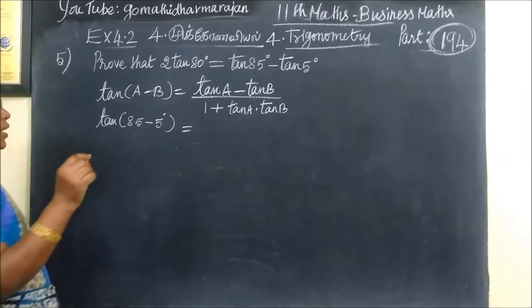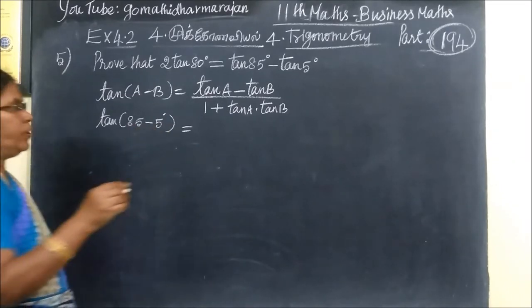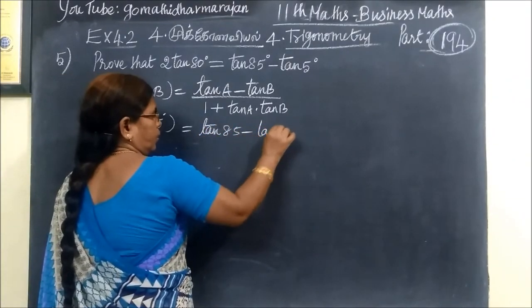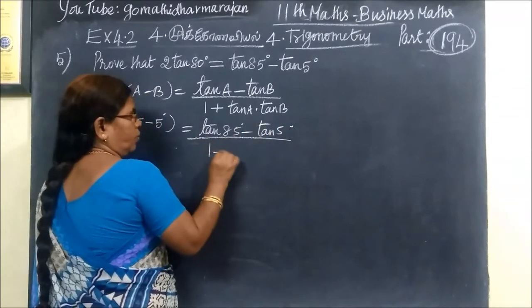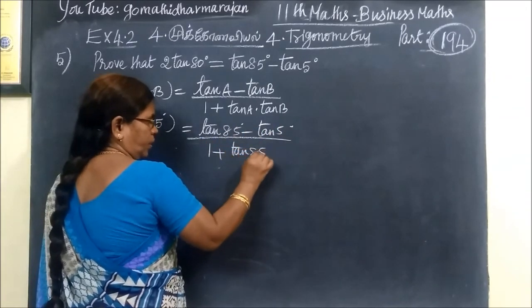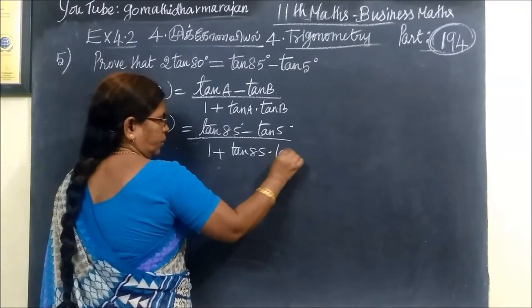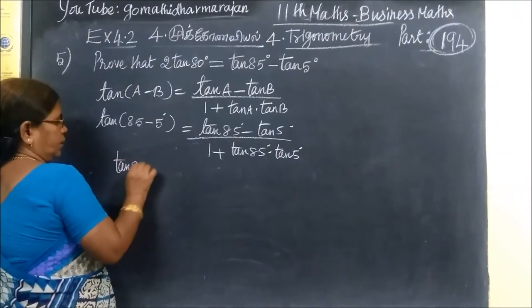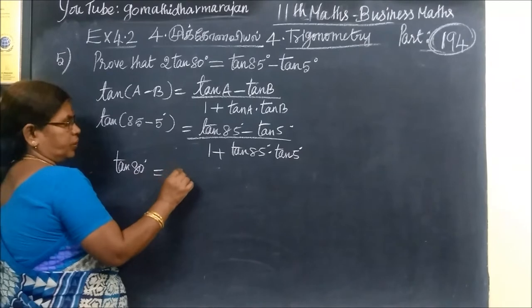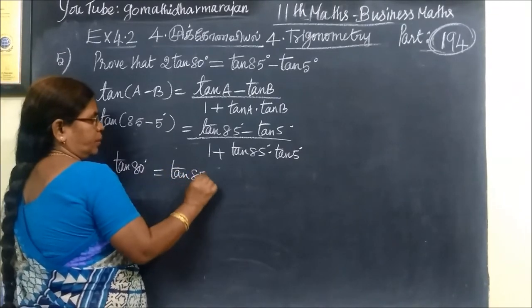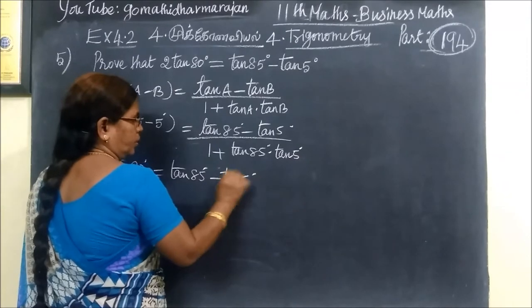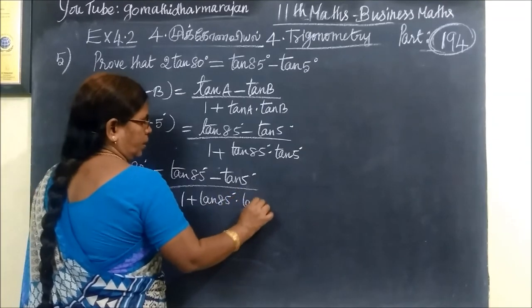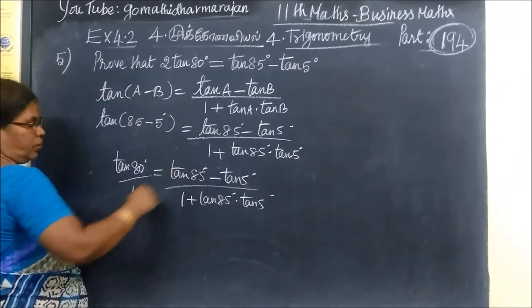Now we will substitute: tan 85 minus tan 5 divided by 1 plus tan 85 times tan 5°. Tan 80 is equal to this. Write the same step, and in the next step you can just cross multiply.